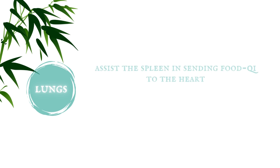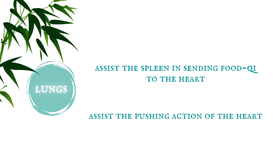The lungs affect blood in several ways. First of all, they assist the spleen in sending food qi to the heart, where it is transformed into blood. Besides, the lungs control all the channels and blood vessels, meaning that the lungs infuse qi into the blood vessels to assist the pushing action of the heart.